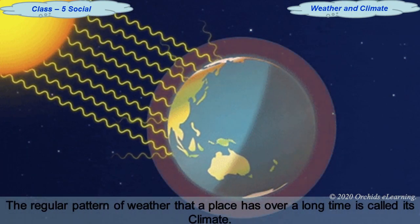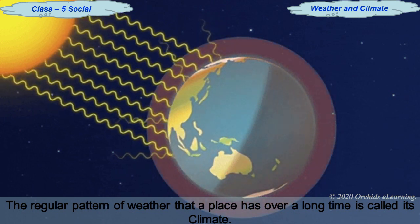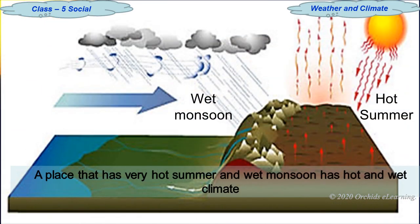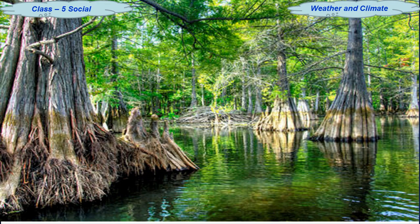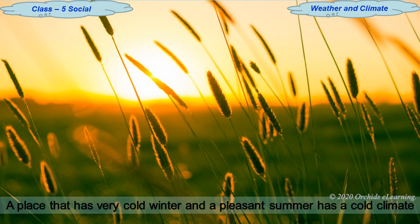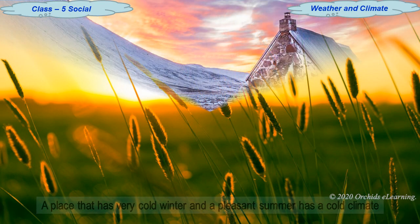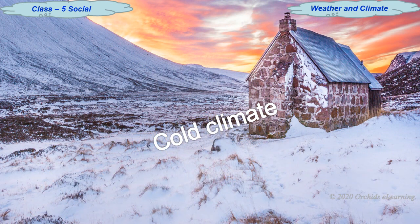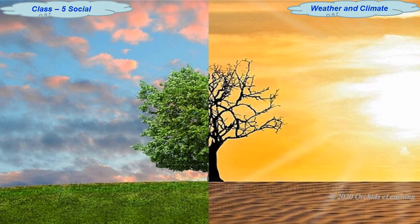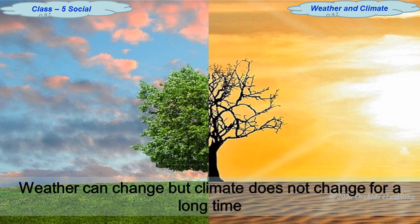The regular pattern of weather that a place has over a long time is called its climate. For example, a place that usually has very hot summers and a very wet monsoon has a hot and wet climate. A place that has a very cold winter and pleasant summer has a cold climate. Weather can change in a short period of time, but the climate of a place does not change for hundreds of years.